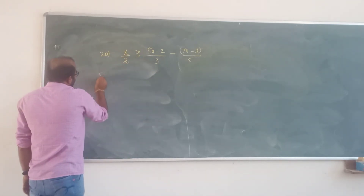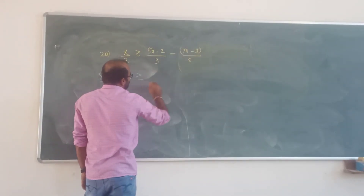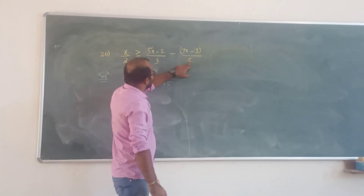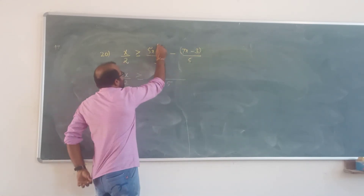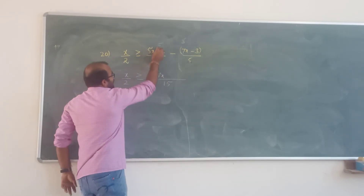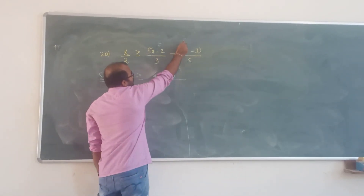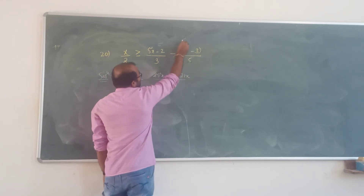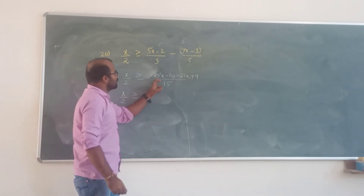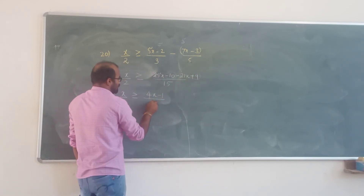3 less or equal to 3. x by 2 greater or equal to: LCM of 3 and 5 is 15. Cross multiply: 5 with this number, 3 with this number. 5x into 5 is 25x. Minus 5 into 2 is minus 10. Minus 3 into 7x is minus 21x. Minus 3 into minus 3 is plus 9.